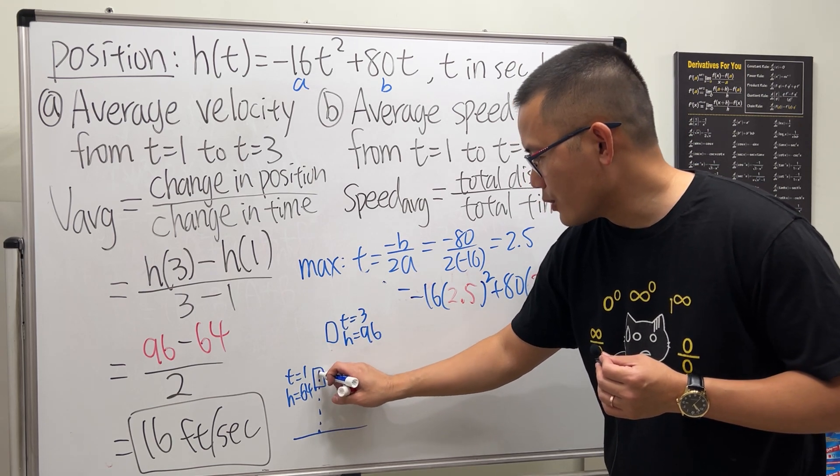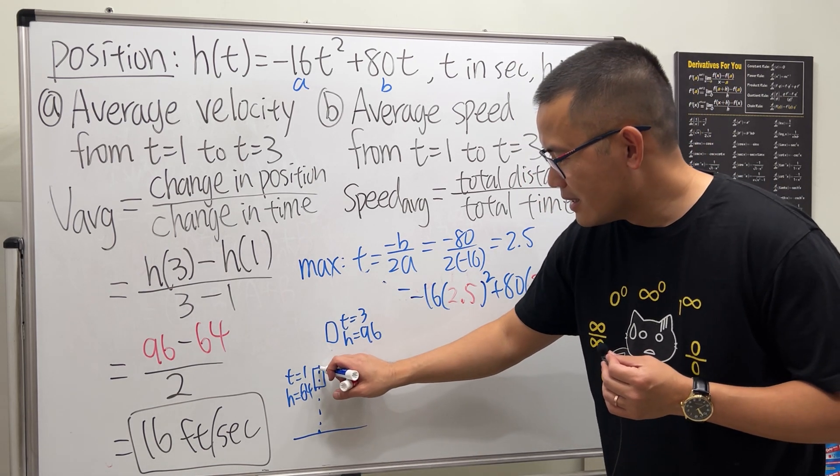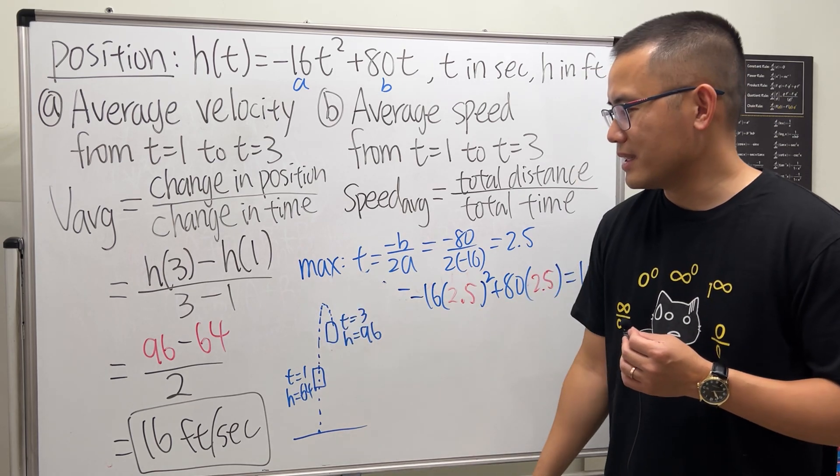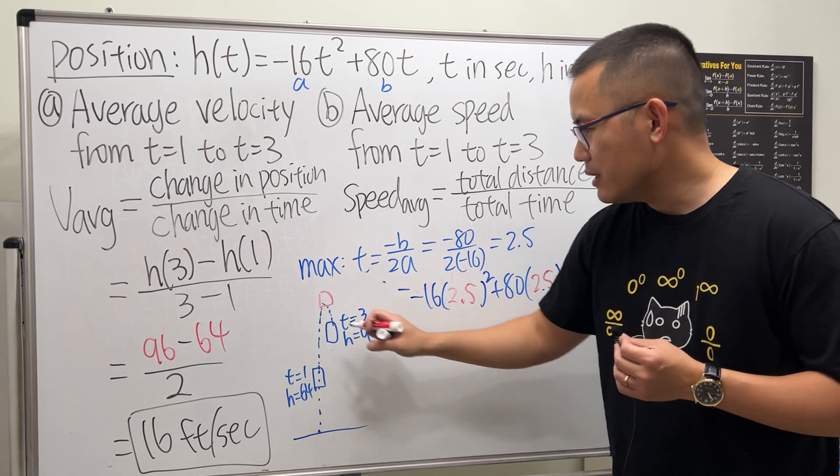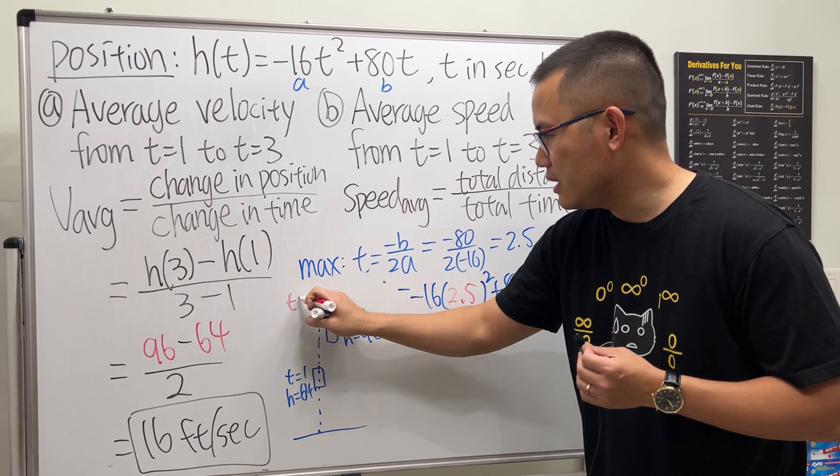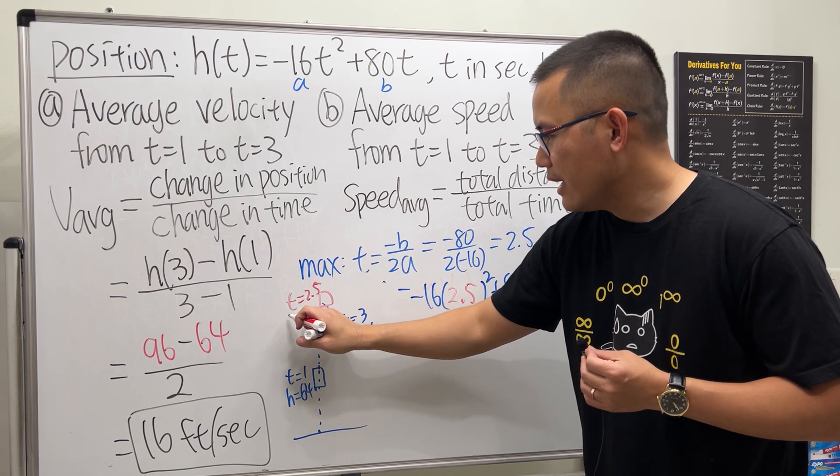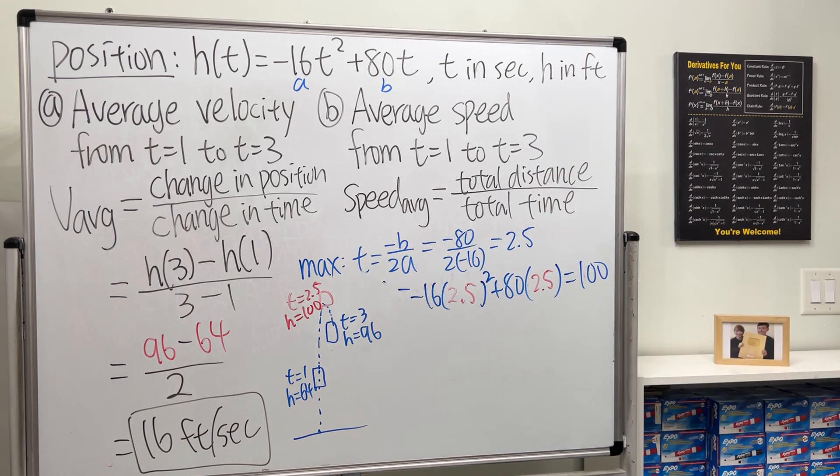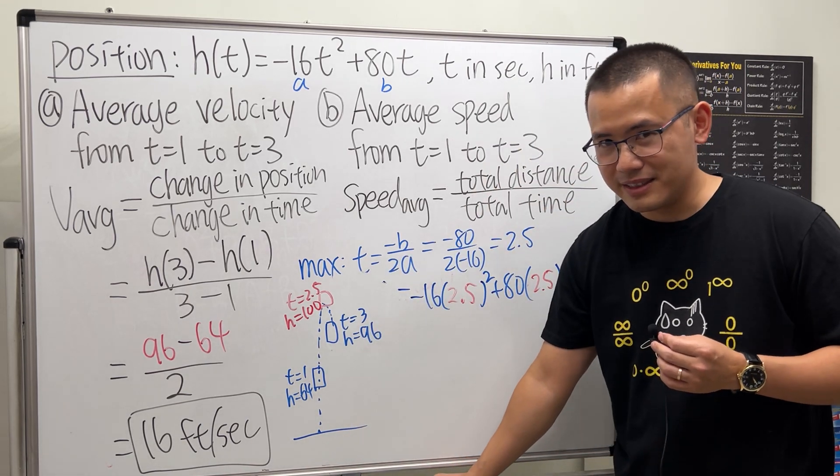However this thing, you know, just goes up, but at 2.5 it reaches maximum and then drops back down a little bit. This maximum is what we found earlier which is t equals 2.5 and that's h equals 100. So that matters as well because we have to find the total distance.